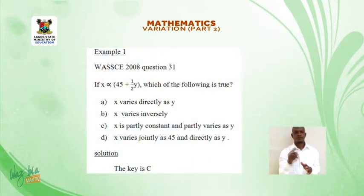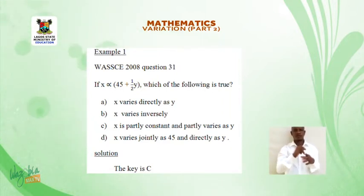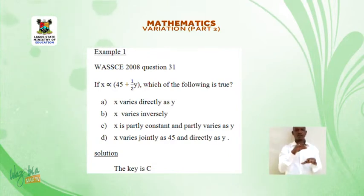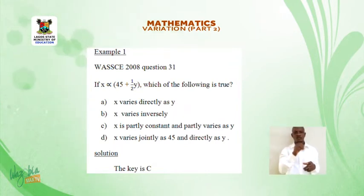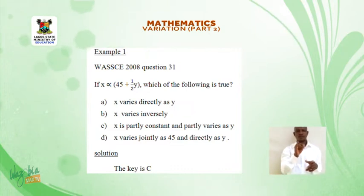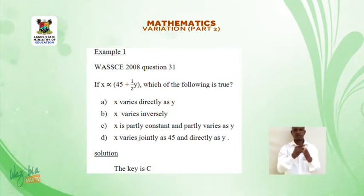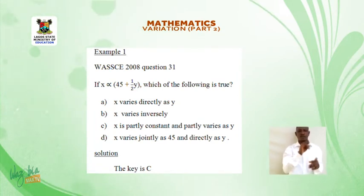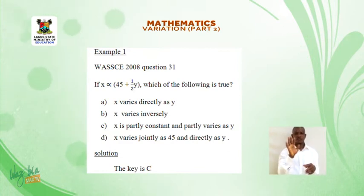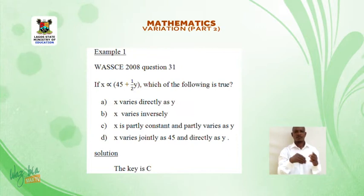Example 1. WAEC 2008, question 31. If x varies as the bracket 45 plus 1 over 2y, which of the following is true? A: x varies directly as y. B: x varies inversely. C: x is partly constant and partly varies as y. D: x varies jointly as 45 and directly as y. Solution: The answer is C. Meet you after the time-out.